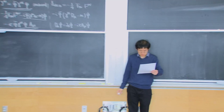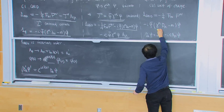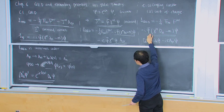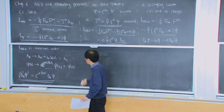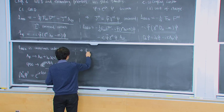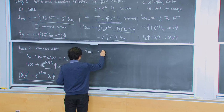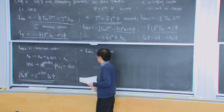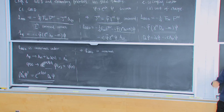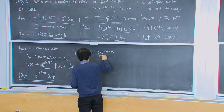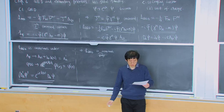So D_mu ψ transforms very simply, and ψ̄ (which has no derivative) transforms as the complex conjugate. We conclude that L_QED is invariant under this transformation. We call it gauge invariant. This is a generalized gauge symmetry which now also transforms the fermions.